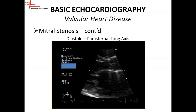You have to recognize mitral stenosis on echo. The acoustic configuration of the anterior mitral leaflet in diastole shows it is not opening fully. When you see a mitral stenotic echo, you should be able to pick it up. The valve can become calcified and mobility can be restricted.